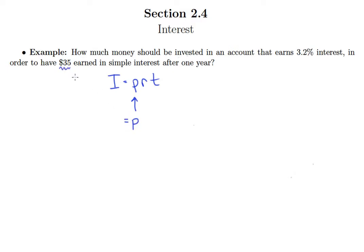$35 is how much earned in simple interest, that's I, so I put 35 there. Remember R is our interest rate but written as a decimal, so put in decimal form. And then T is in years and we've invested this amount for one year.